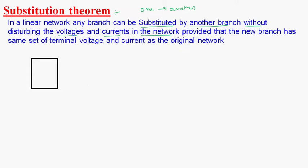Let us consider a network — any network, whatever it may be — to which a resistor R is connected, through which a current I is flowing. So by using the substitution theorem, what we have to do is remove this branch — that is, we have to replace the resistance with some voltage source. The magnitude of that voltage V is equal to I into R.